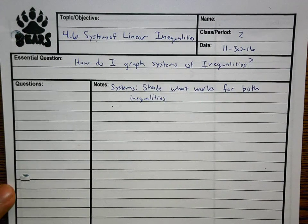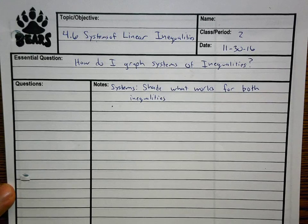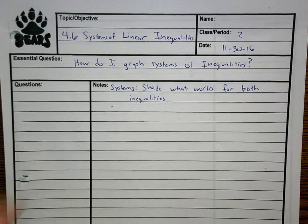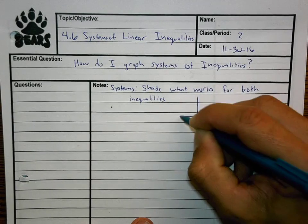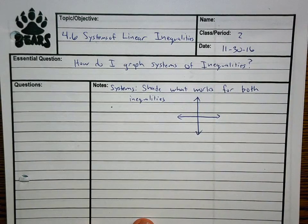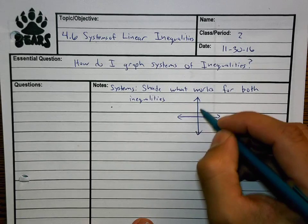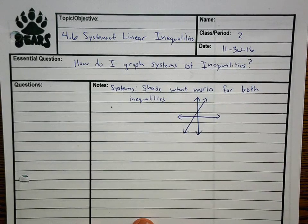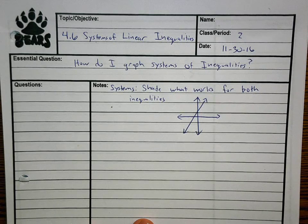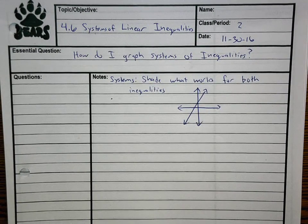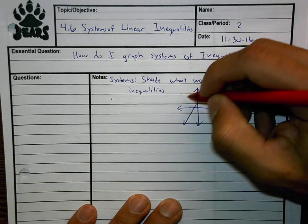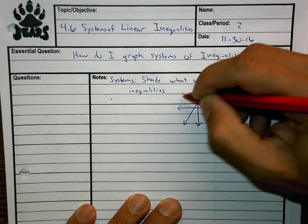For systems we have to shade what works for both inequalities. I'm going to give you an example without anything else other than a picture. Let's just look at a picture real quick and I'm going to draw two lines. Here's my first one, that's my first one right there, the blue one. I'm going to change colors and I'm going to do another one right here in red.